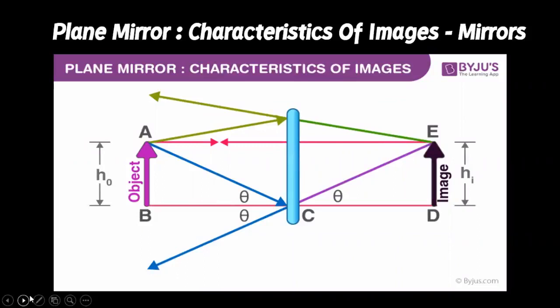To form an image, we require at least two rays from the object which appear to meet at a point. In the case of a plane mirror, here we have three rays for better clarity in the ray diagram. For the ray starting from point A and traveling horizontally toward point B, the angle of incidence is zero, and hence it retraces its path. Similarly, the ray starting from A traveling to point C follows the law of reflection. When these rays are produced backwards, they appear to meet at point A prime. This image is known as a virtual image.